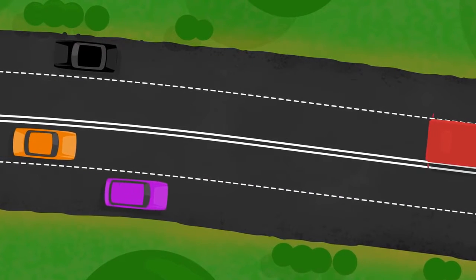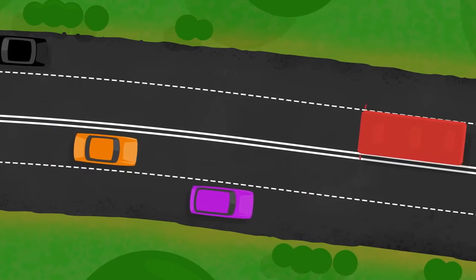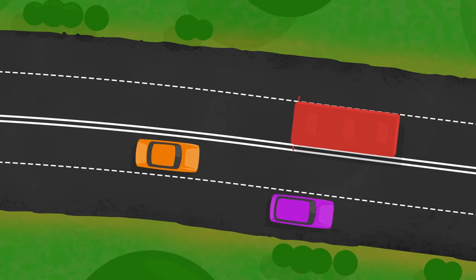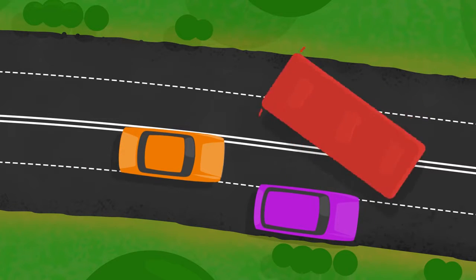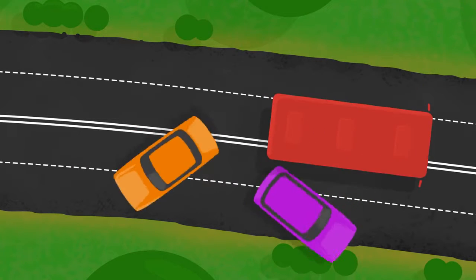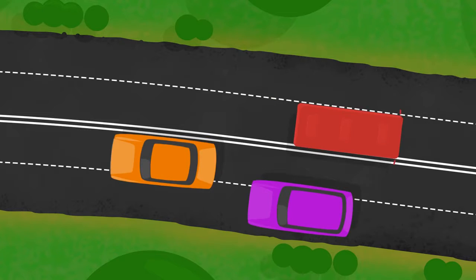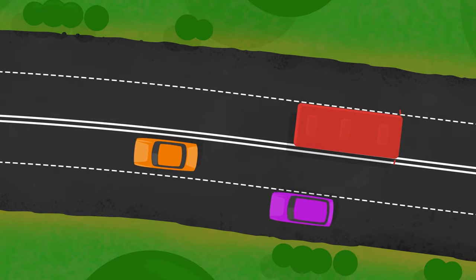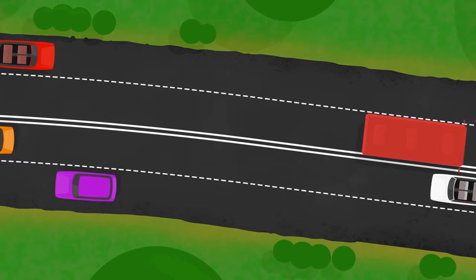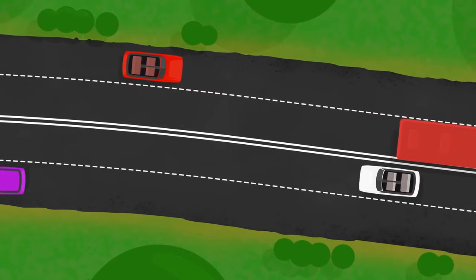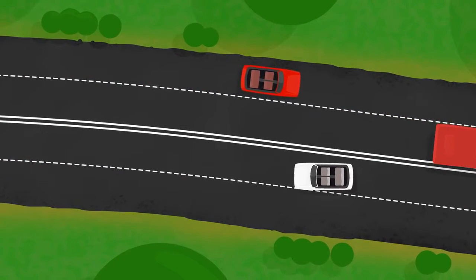In most countries, cars drive on the right side of the road, but in England it's different. There, the vehicles drive on the left side, so before crossing the street, you need to look to the right first to see them coming.